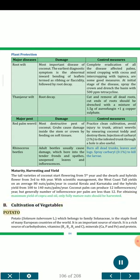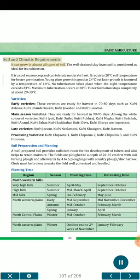B. Cultivation of Vegetables. Potato (Solanum tuberosum L.) belongs to family Solanaceae and is the staple food of many European countries. It is an important source of starch and is a rich source of carbohydrates, vitamins B1, B2, B6 and C, minerals Ca, P and Fe, and protein. Soil and Climatic Requirements: It can grow in almost all types of soil; well-drained clay loam soil is considered ideal. It is a cool-season crop and can tolerate moderate frost. It requires 20°C soil temperature for better germination. Plant growth is good at 24°C but later growth is favored at 18°C. No tuberization takes place when night temperature exceeds 23°C; maximum tuberization occurs at 20°C; tuber formation stops completely at about 29–30°C.